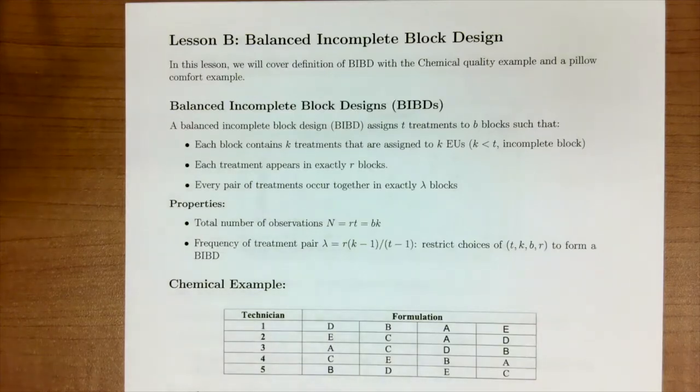But if we go into an experiment and we know certain things, such as we won't be able to use every treatment for each person or technician, we can be smart about how we design it so that we can get good properties out of our experiment. So this lecture is all about balanced incomplete block designs.